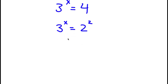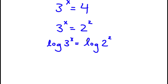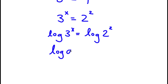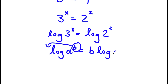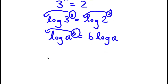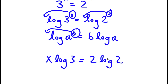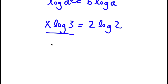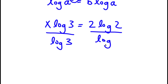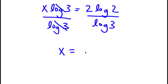Now I'm going to take the log on both sides, so I have log of 3 to the power of x equal to log of 2 to the power of 2. Using the property that log of a to the power of b equals b times log a, I can move the exponents to the front: x times log 3 is equal to 2 times log 2. To solve for x, I divide both sides by log 3, and these cancel out, leaving x equal to 2 times log 2 over log 3.